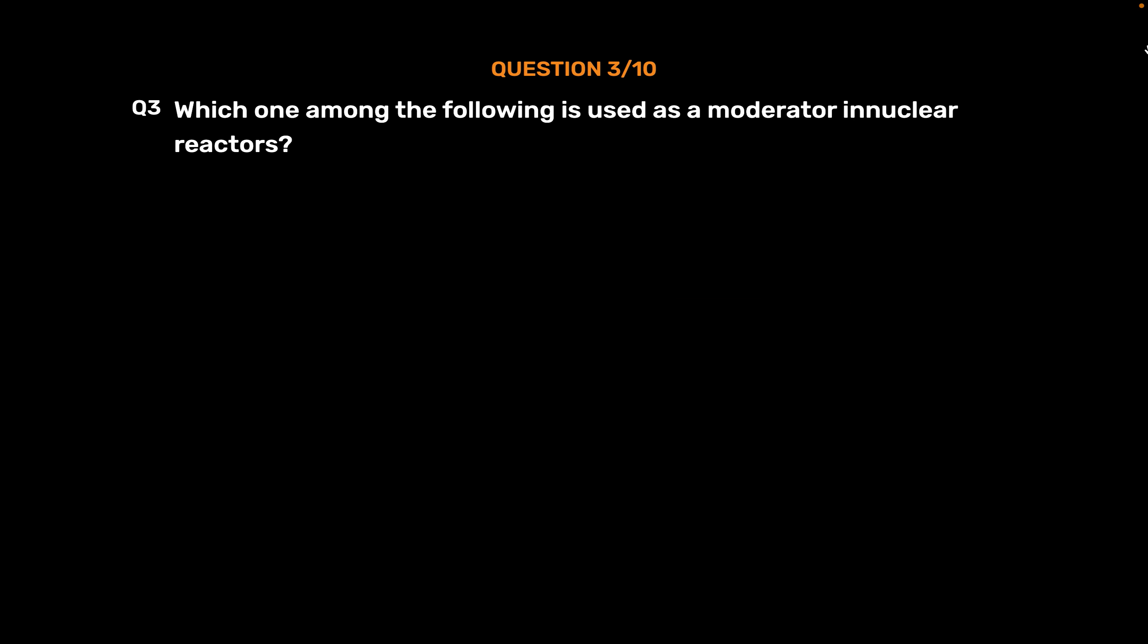Question number 3: Which one among the following is used as a moderator in nuclear reactors? Option A: Ozone. Option B: Heavy hydrogen. Option C: Heavy water. Option D: Hydrogen peroxide. The correct answer is Option C: Heavy water.